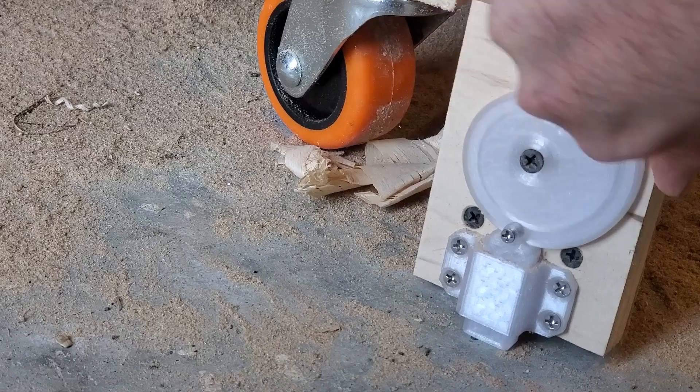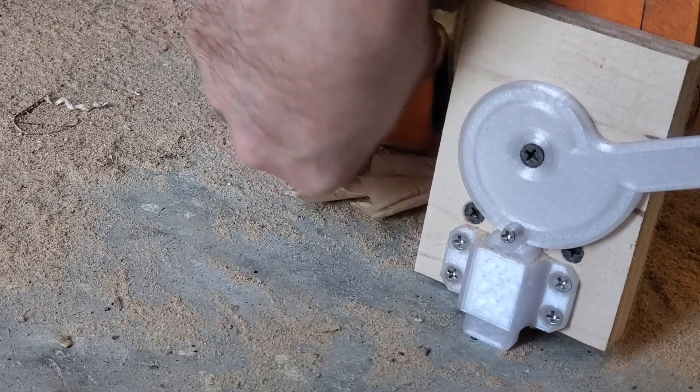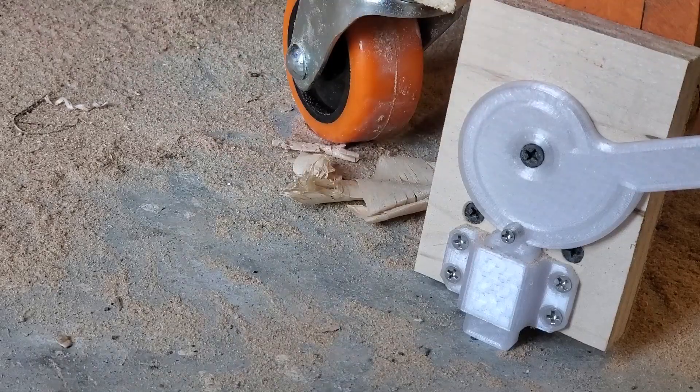When you actuate the cams the foot pushes down, lifts it up so that the caster is off the floor and the bandsaw stays stationary.